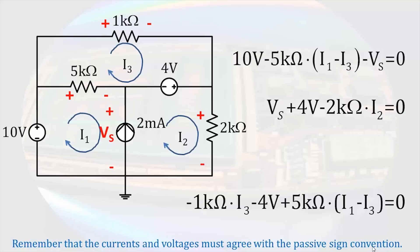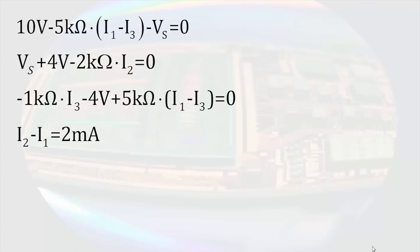Now we have three equations with four unknowns. A fourth equation is obtained by remembering that the difference between I2 and I1 is 2 milliamps. I2 is the mesh current that agrees with the direction of the current source, so we treat it as positive. We will then arrange the equations so that they are more easily substituted into matrices.